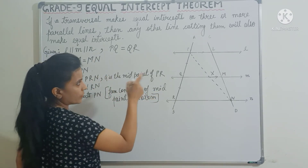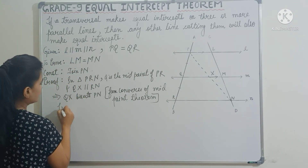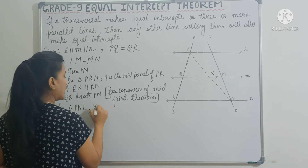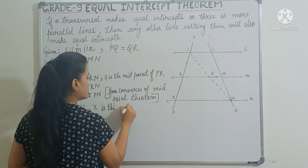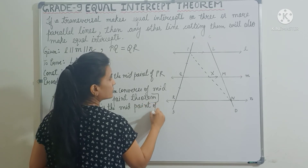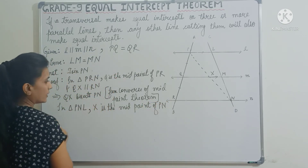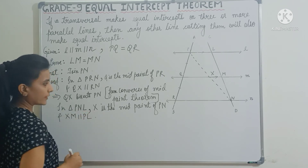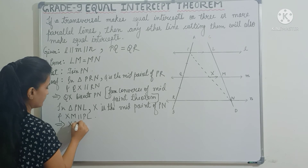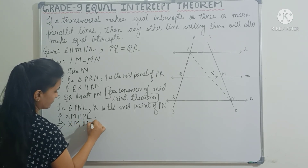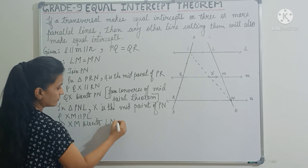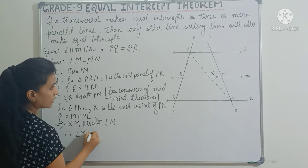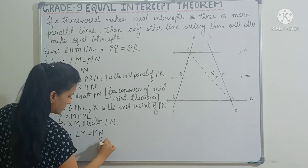Next, take triangle PNL. In this triangle, X is the midpoint of PN — as we just proved — and XM is parallel to PN. This implies XM bisects LN — again from the converse of the midpoint theorem. Therefore, LM is equal to MN. Hence proved.